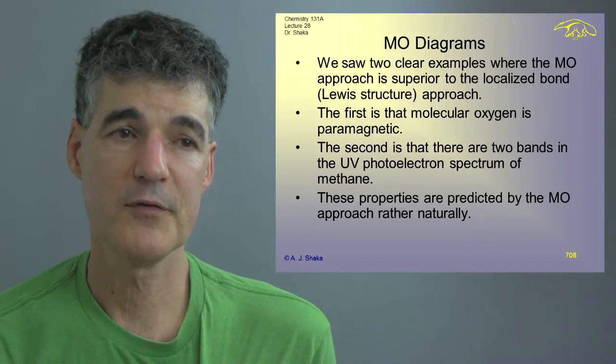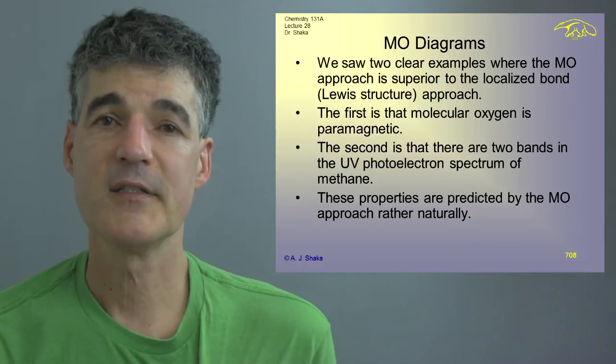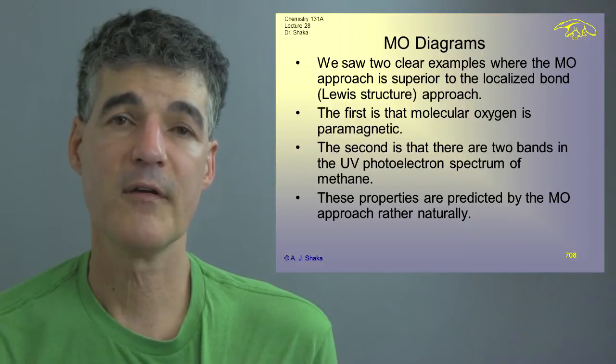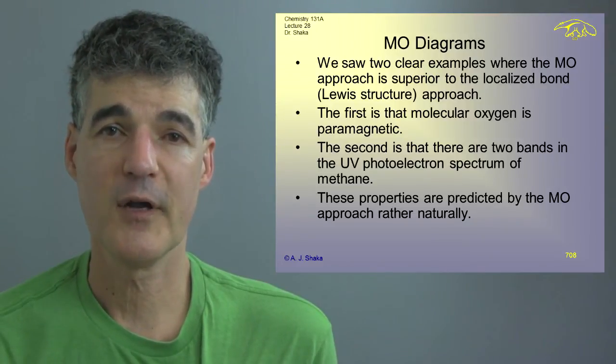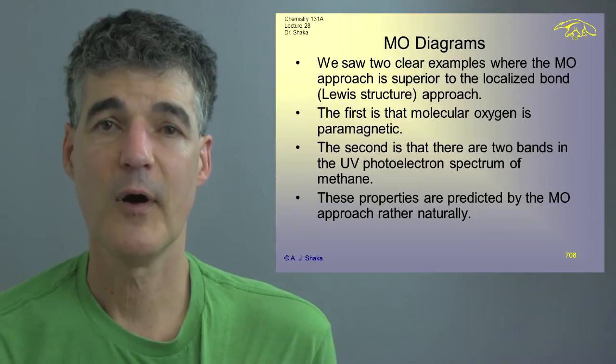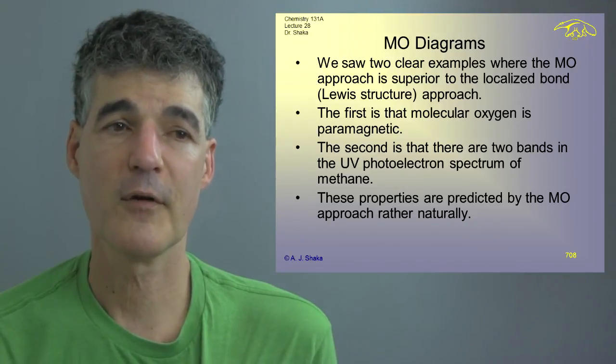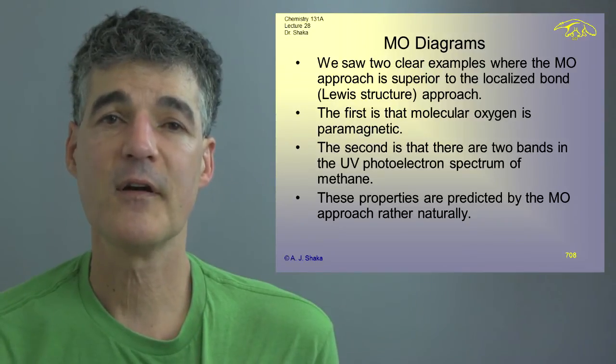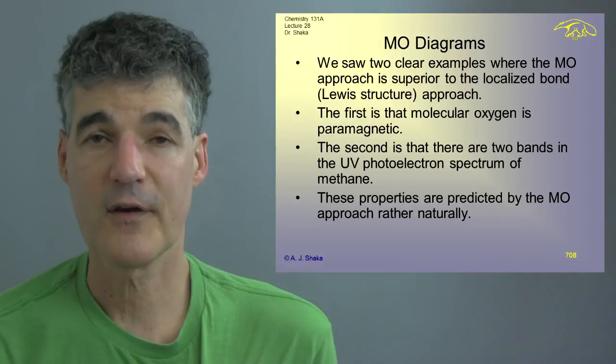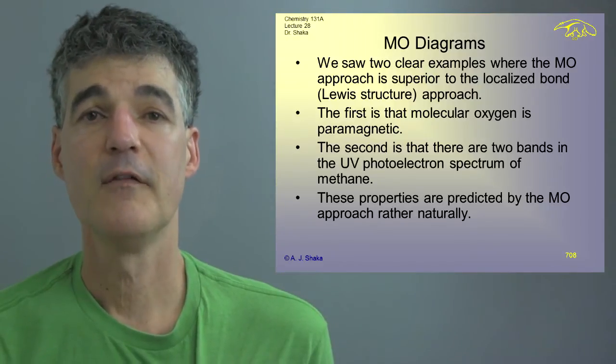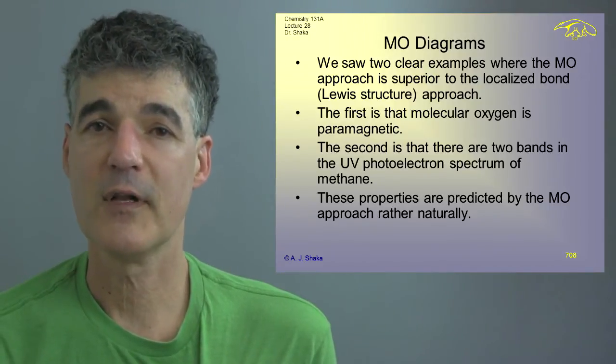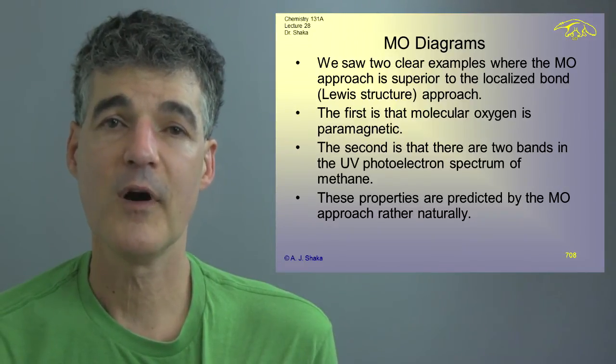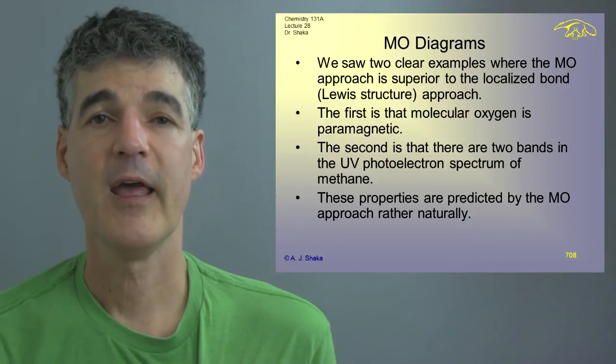We saw a couple of examples that I highlighted where the molecular orbital theory was superior to the localized bond or Lewis structure approach. The first is that molecular oxygen is paramagnetic. The molecular orbital theory clearly predicts that we could have two unpaired electrons. That's what we observe. The other form, remember, is called singlet oxygen. And the other is that there are, that we saw, a simple example, is that there are two photoelectron bands in the UV photoelectron spectrum of methane. One of them we called A1 and one of them we called T2.